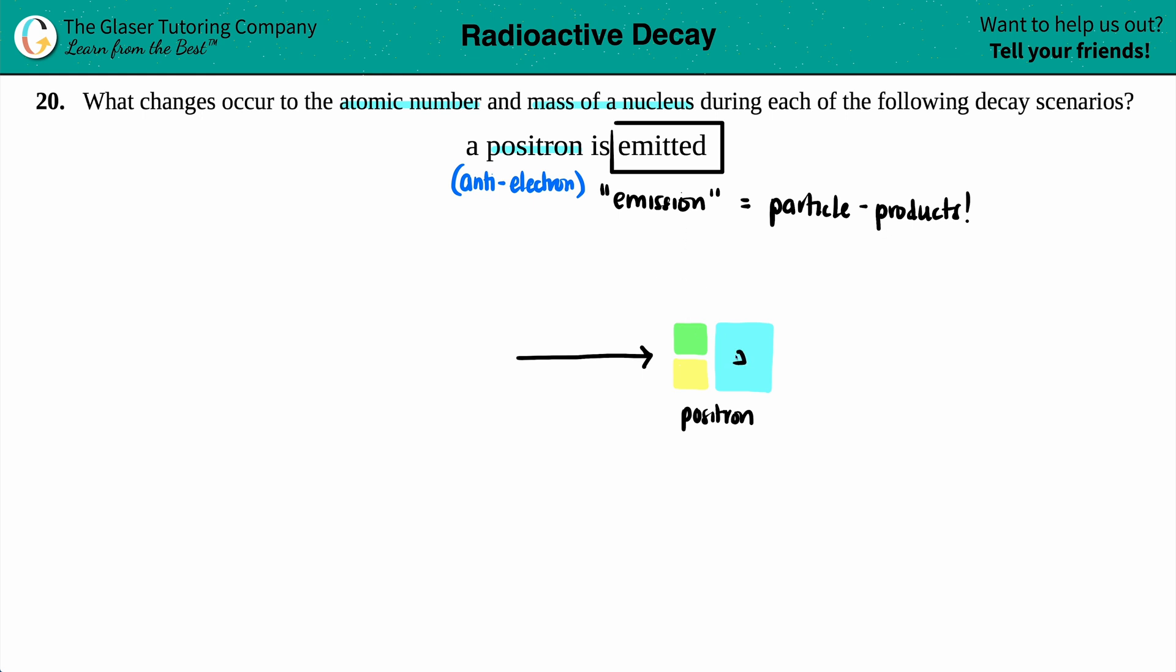We could either write it as an E value, so E for electron, or we could do a beta sign because electrons are known as beta emissions. So we'll keep the beta here.